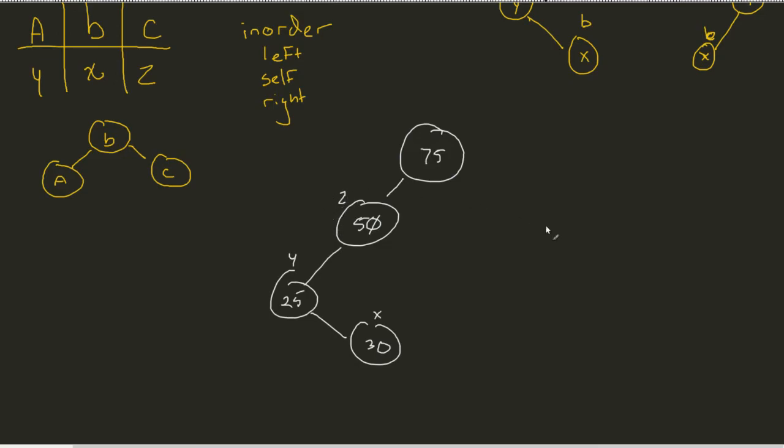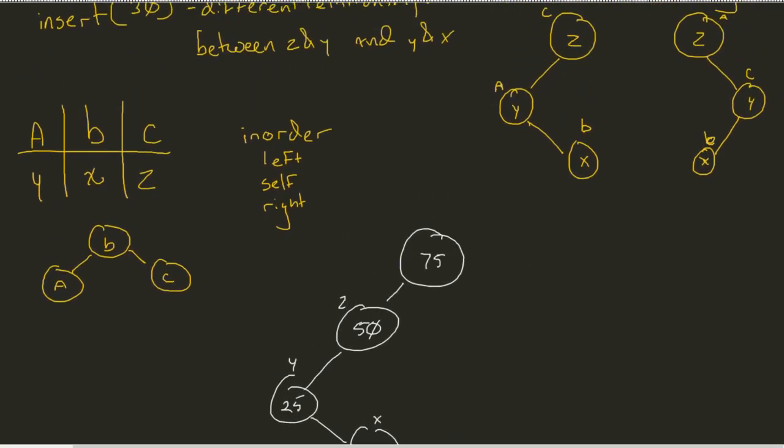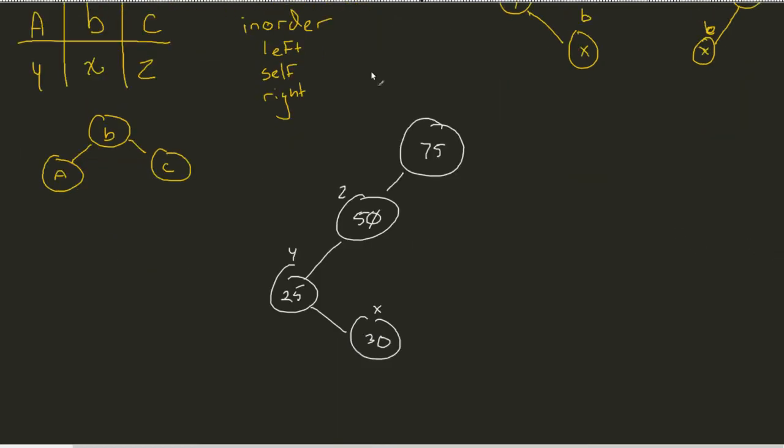So once again, if I take the approach that I just said, I make the in-order approach, I take my A, B, and C, and I apply this. I'm going to see that my B is going to become my new root. So I take this approach, I apply trinode restructuring.